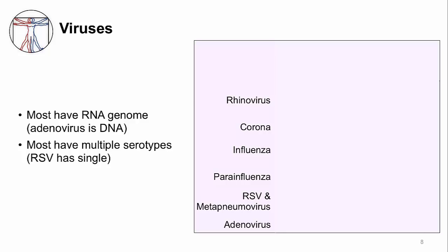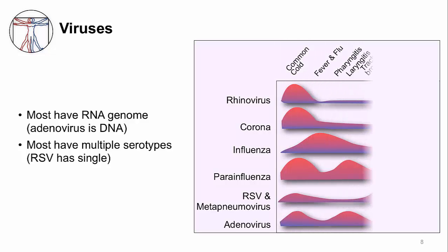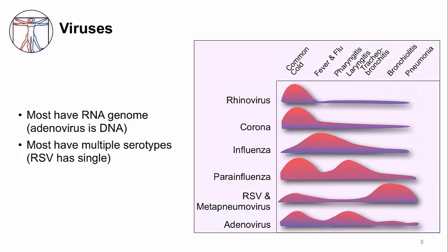This image looks at the clinical syndromes relative to the virus. Each of these respiratory viruses can cause multiple clinical syndromes. For example, RSV and human metapneumovirus mostly cause bronchiolitis — you can see the hump on the graph — but sometimes they can cause a common cold.